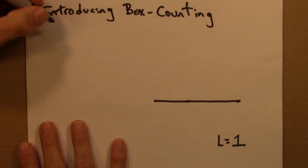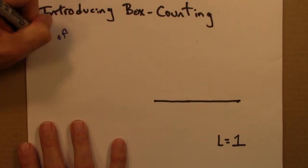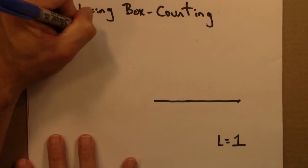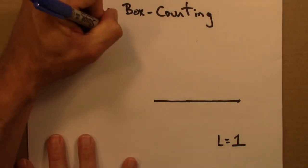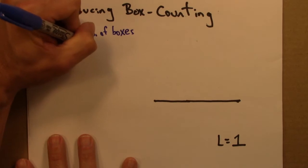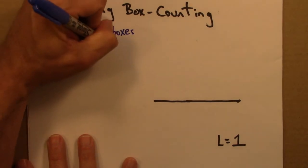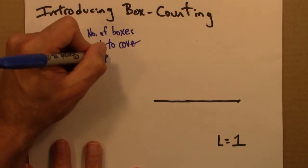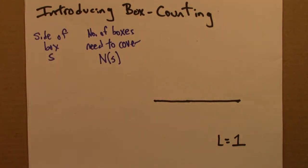So I'm going to keep track of two quantities. First, the size of the box, maybe call it the side of box. And I'll call that S. And then, the number of boxes that we need to cover. And I'm going to call that N of S. And I'm going to fill out a table, and I'm going to fill that table out by counting boxes.